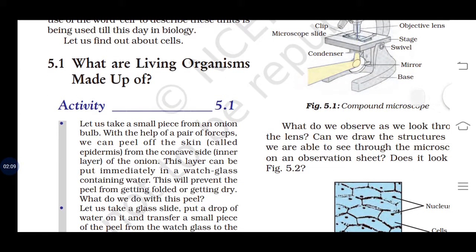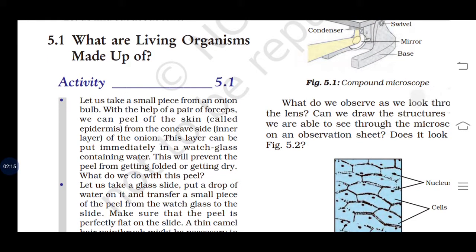What are living organisms made up of? Let us take a small piece of onion bulb. With the help of a pair of forceps, we can peel off the skin from the concave side of the onion. This layer can be put immediately in a watch glass, which will prevent the peel from getting folded or getting dry.